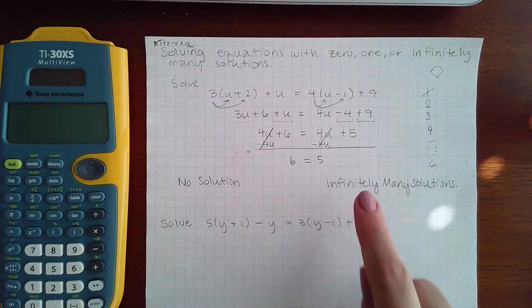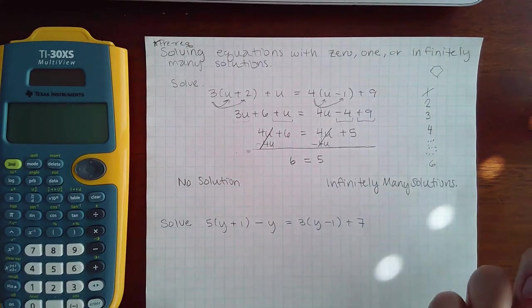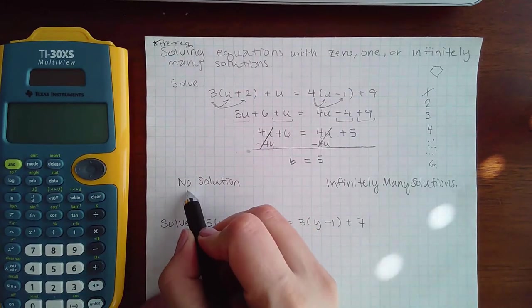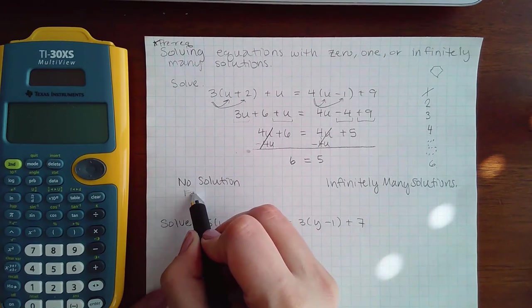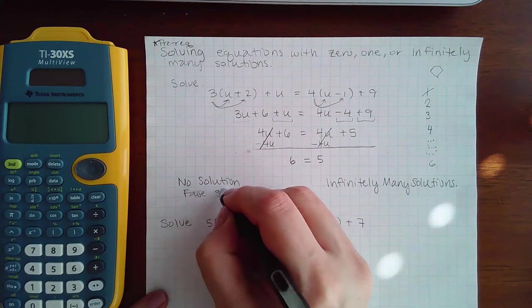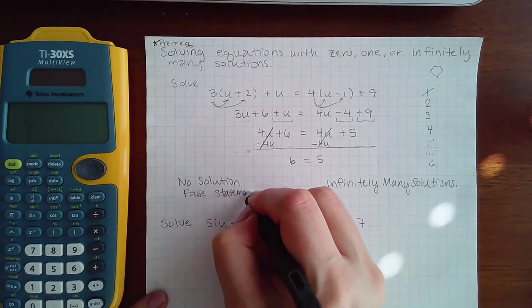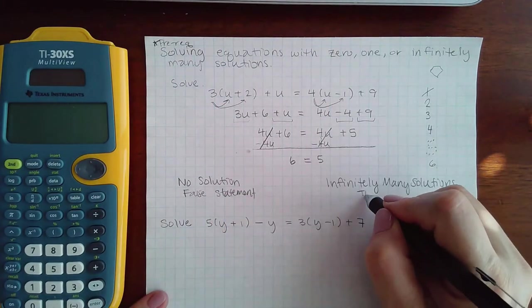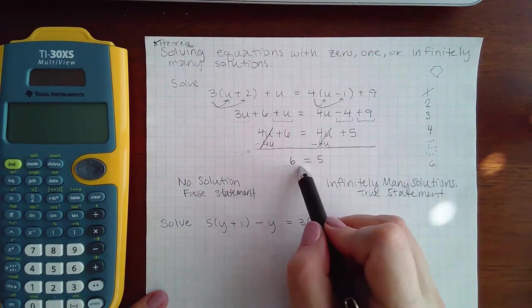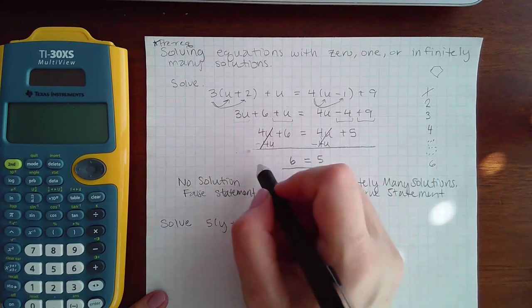So how do you decipher whether the answer is no solution or infinitely many solutions when the variables completely wipe out on both sides? That is whether the statement is a false statement or whether it is a true statement.